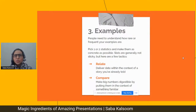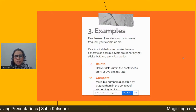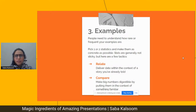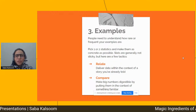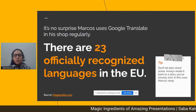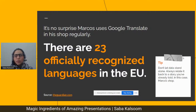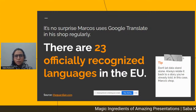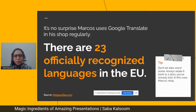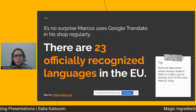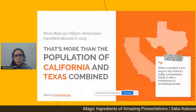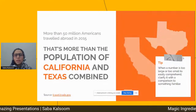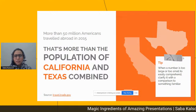After examples, put in concrete, relatable statistics. Stats alone aren't sticky — relate them to your audience or compare them to something familiar. For instance, saying there are 23 officially recognized languages only makes sense when tied to Marcos using Google Translate regularly. Similarly, saying over 50 million Americans traveled abroad in 2015 is more relatable when you say that number is more than the combined population of California and Texas.